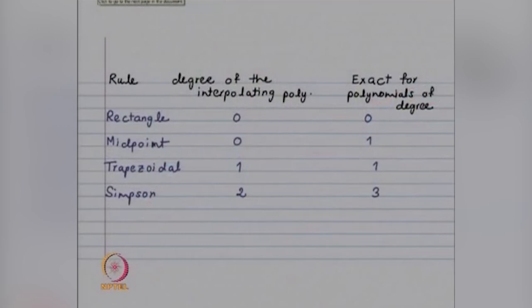For Simpson's rule, we saw that even though we are fitting a quadratic polynomial, there is no error if the function is a cubic polynomial. For the midpoint rule, we were fitting a constant polynomial, but we got exactitude for polynomials of degree less than or equal to 1. Now let me look at the comparison of the rules.